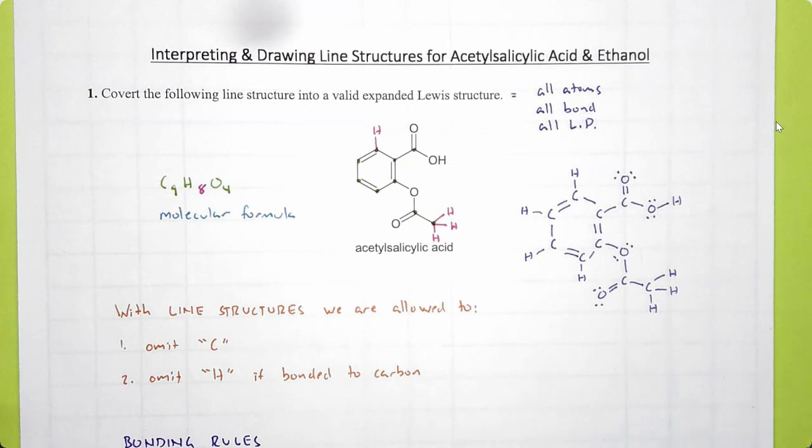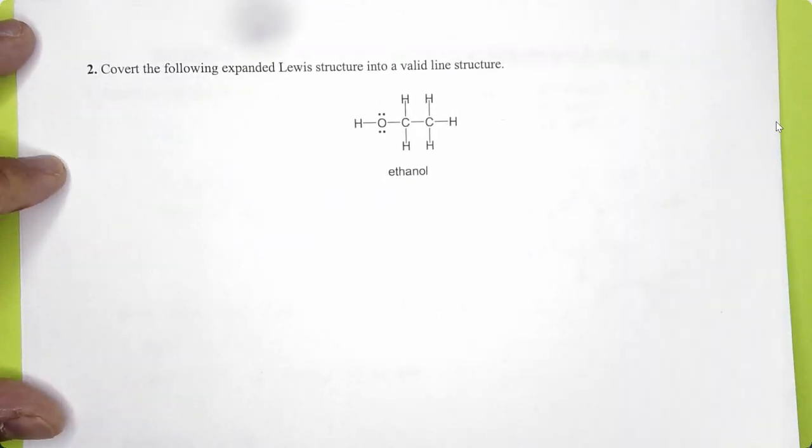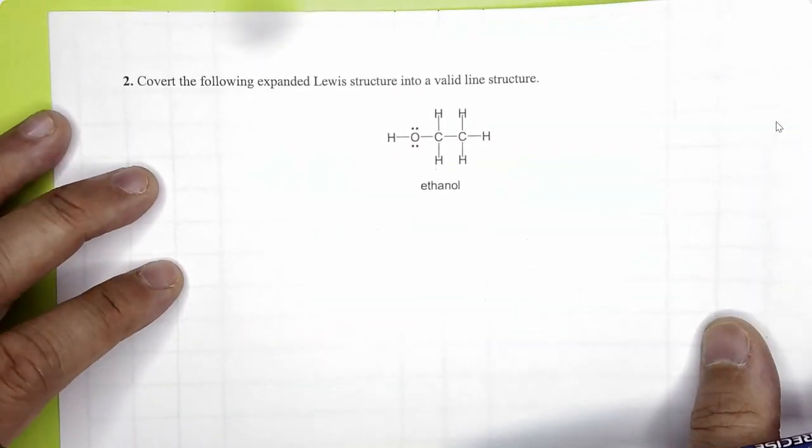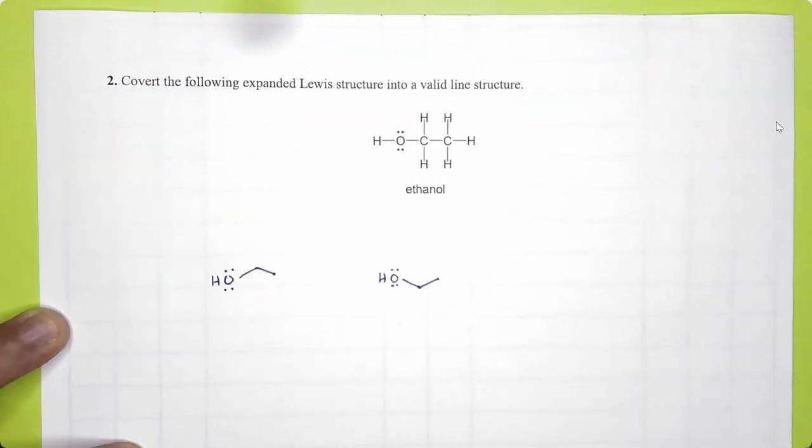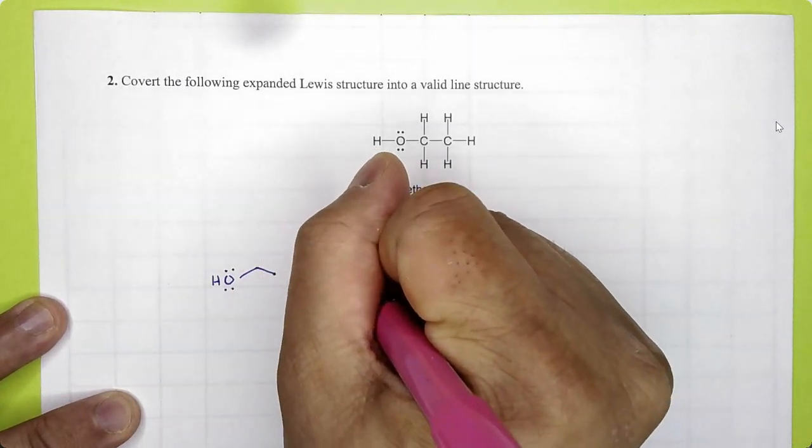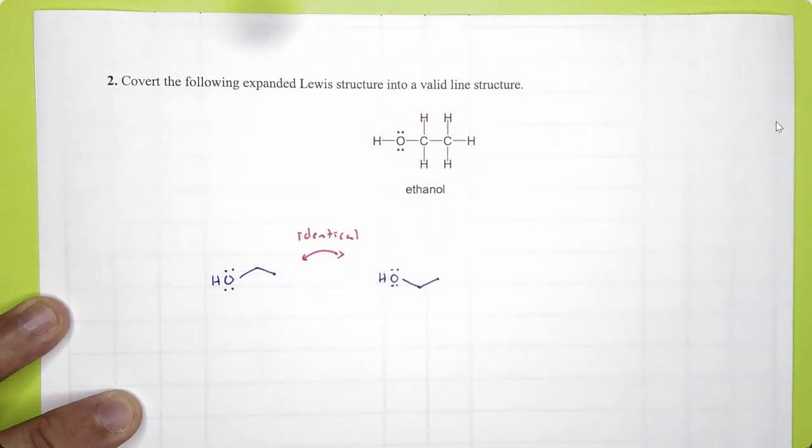Now let us go the other way. Let us try to draw the line structure for a molecule where we are given the expanded structure. And here I have ethanol. Go ahead and pause the video and using the concepts that we just went over, draw a proper line structure for ethanol. Two ways that you could draw the valid line structure for ethanol are shown here. They are both valid. These two are actually identical.